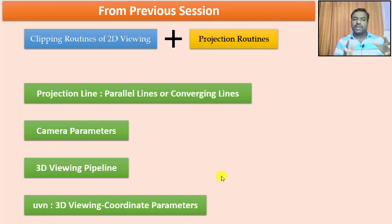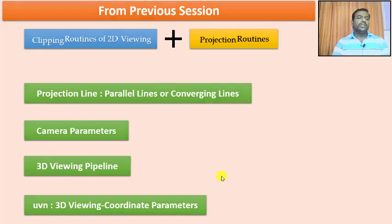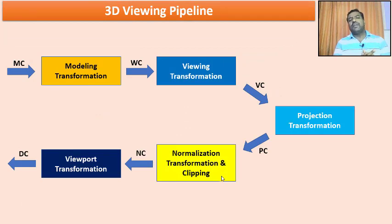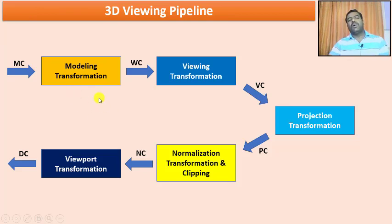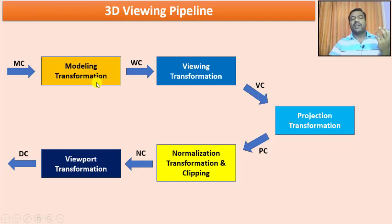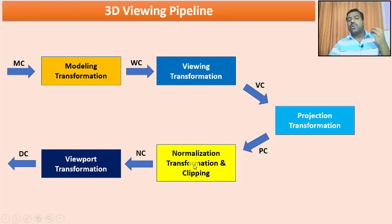These concepts contribute as a base for discussing the 3D viewing pipeline and particularly the projection routines. The 3D viewing pipeline consists of a modeling transformation, which takes the model coordinate system and fits it into the world coordinate system. The major work comes from the viewing transformation, the projection transformation, normalization, and the viewport transformation to obtain device coordinates. This is what the 3D viewing pipeline works with.